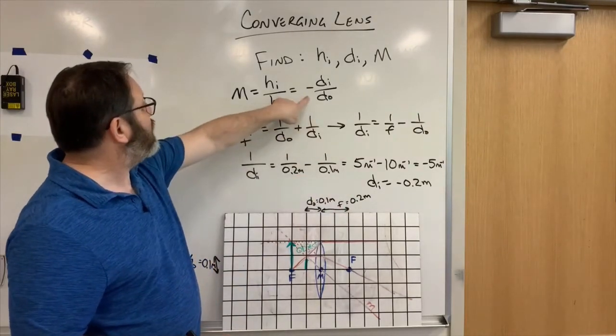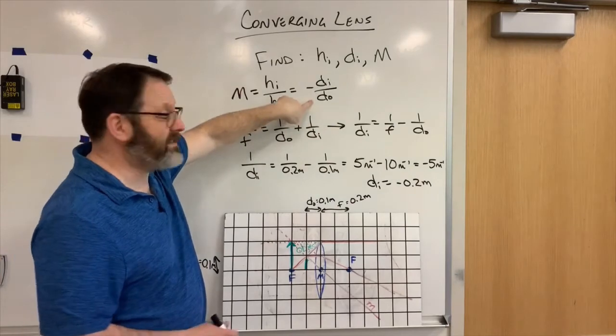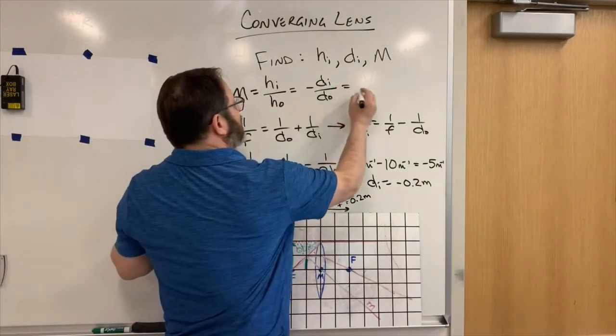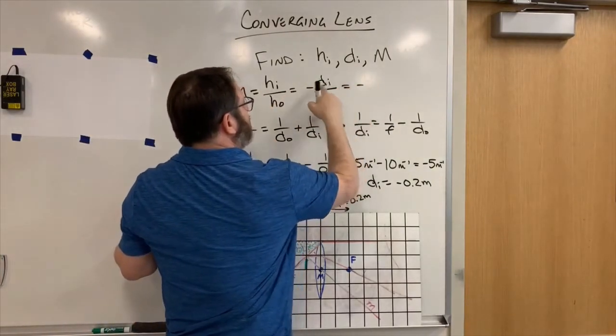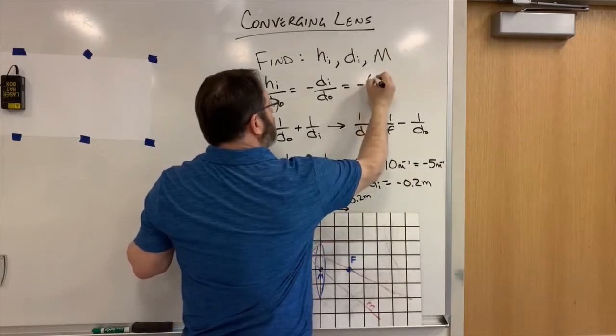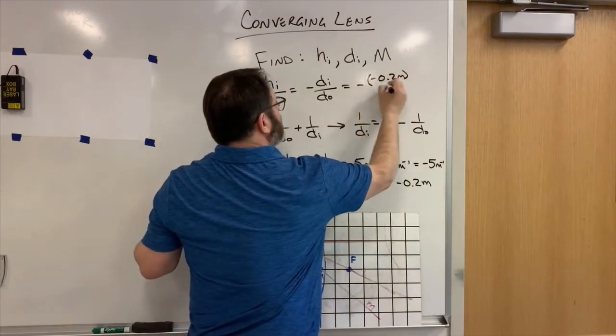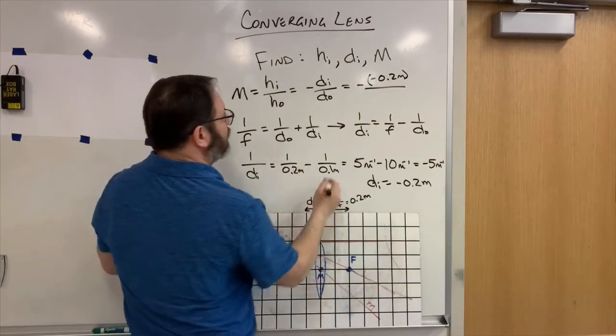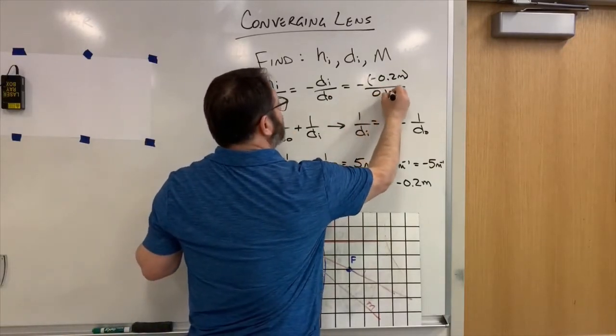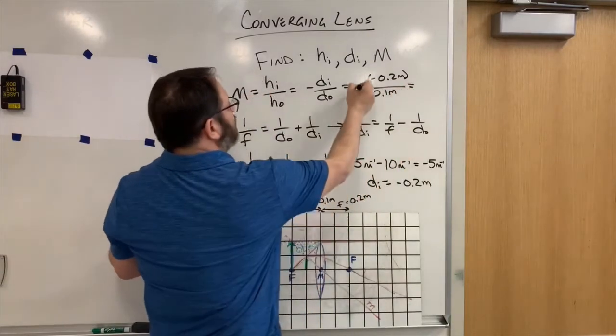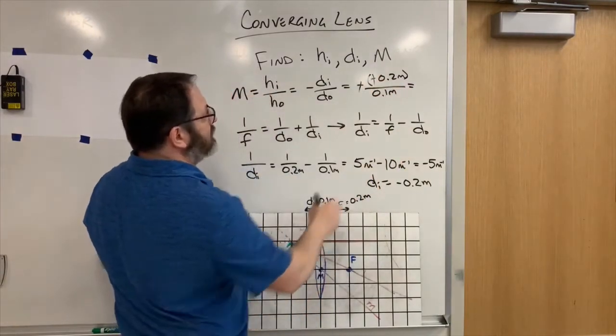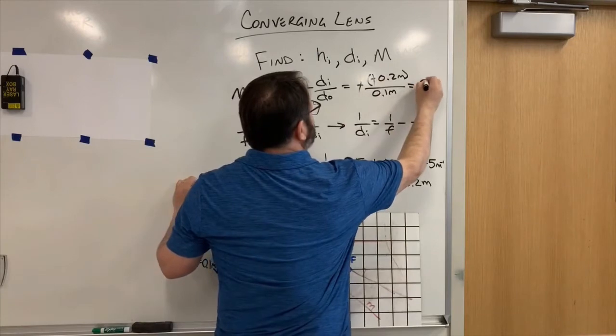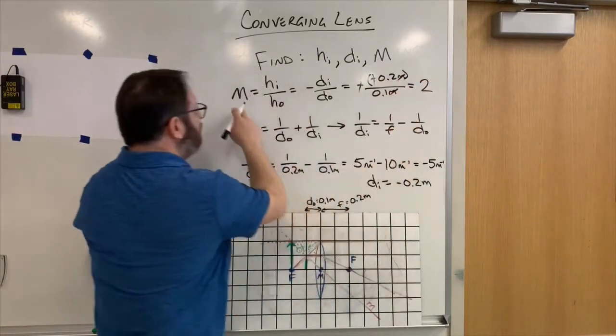Now I know the distance to the image and the distance to the object. So minus distance to the image is minus 0.2 meters over distance to the object, which was 0.1 meters. So minus and minus cancel, 0.2 over 0.1, this is 2. Magnification is 2.